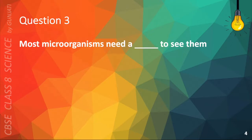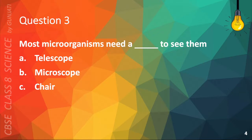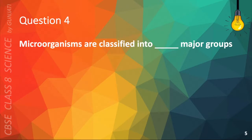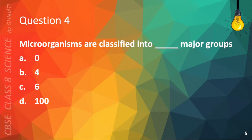Question 3. Most microorganisms need a blank to see them. A. Telescope, B. Microscope, C. Chair, or D. Metal. The correct answer is B. Microscope. Question 4. Microorganisms are classified into blank major groups. A. Zero, B. Four, C. Six, or D. One hundred. The correct answer is B. Four.